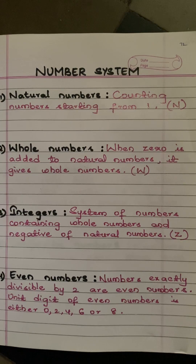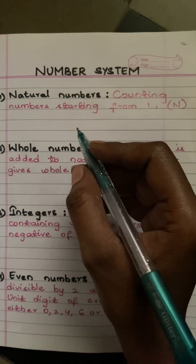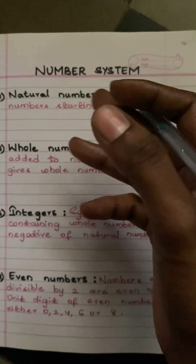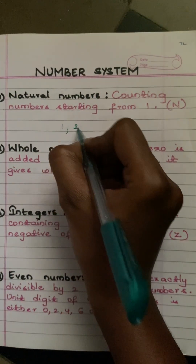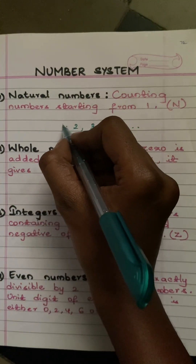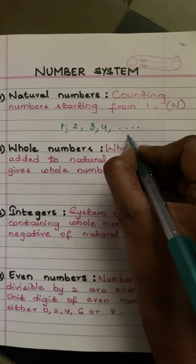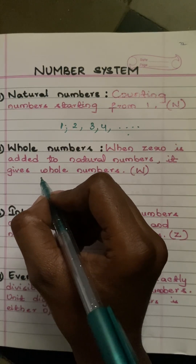Natural numbers are counting numbers starting from one. They are represented by the letter N. What are counting numbers? If we ask anyone to start counting how many pens or eggs are there, we start from one, two, three, four and so on. So numbers starting from one are all the natural numbers.